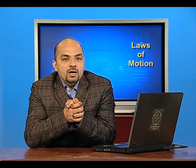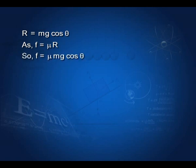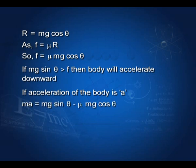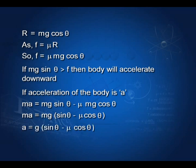By the laws of friction, F = μR = μmg cosθ. If mg sinθ is greater than the force of friction, the body accelerates downward. Net force: ma = mg sinθ − μmg cosθ. Taking out mg common from the right-hand side: ma = mg(sinθ − μ cosθ). Cancelling m from both sides, we get a = g(sinθ − μ cosθ).